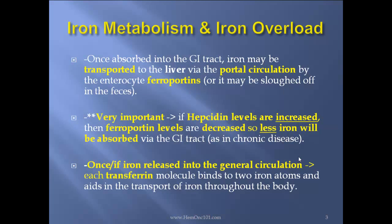Once absorbed in the GI tract, iron may be transported to the liver via the portal circulation by the enterocyte ferroportin, or it may be sloughed off in the feces. If hepcidin levels are increased, then ferroportin levels are decreased, so less iron will be absorbed via the GI tract, such as in chronic disease.